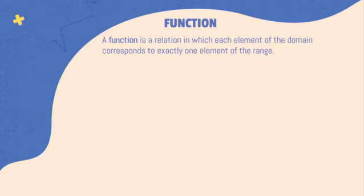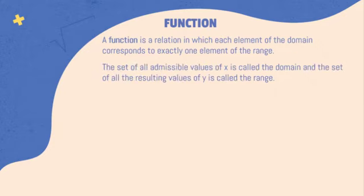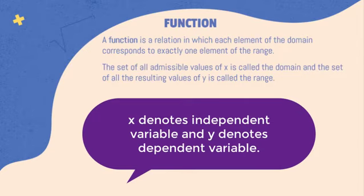Function: What is a function? A function is a relation in which each element of the domain corresponds to exactly one element of the range. The set of all admissible values of x is called the domain, and the set of all the resulting values of y is called the range. Because the value of y is dependent on x, x denotes the independent variable, and y denotes the dependent variable.